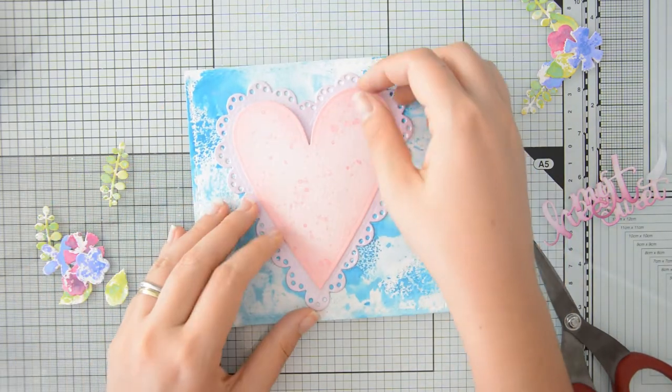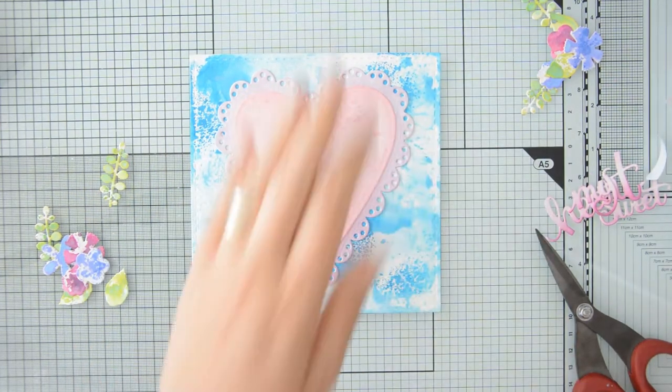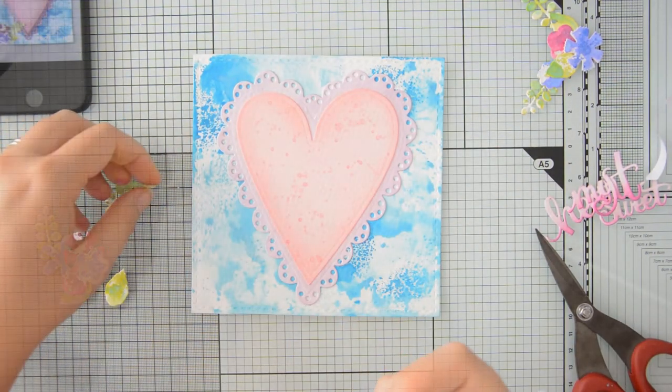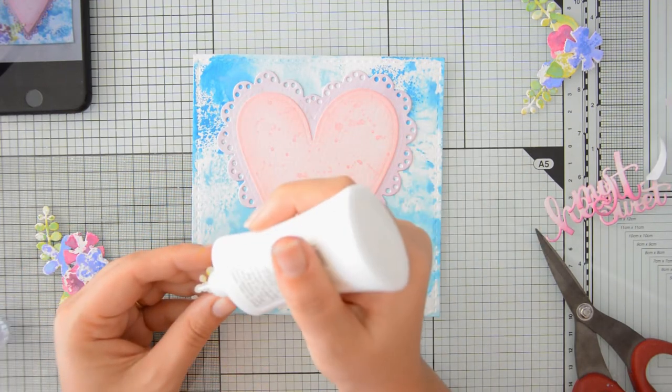And you can see that off-camera, I added some splatters with Distress Oxide in Worn Lipstick to add some more texture to this piece, so that it would tie in nicely with the rest of the card.